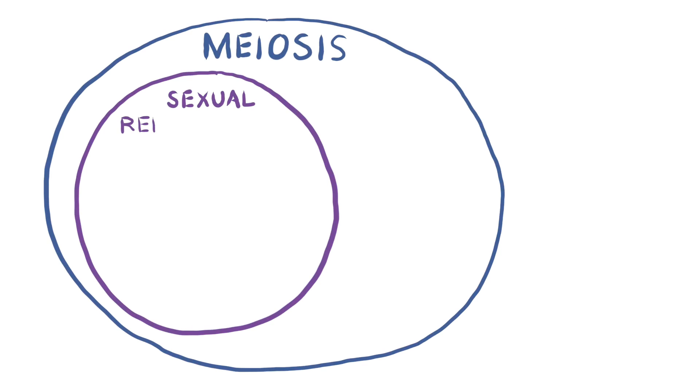Now, answering that question is hard, because everything that reproduces sexually uses meiosis. But many organisms also reproduce asexually, and some of those don't use meiosis.